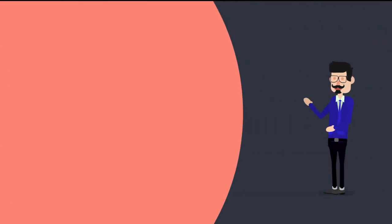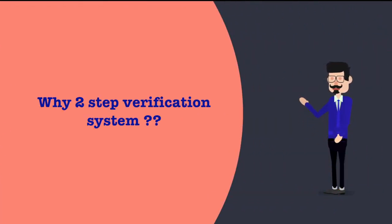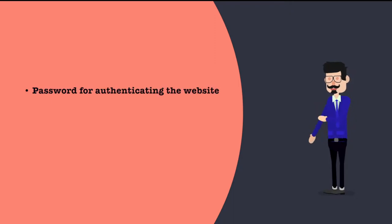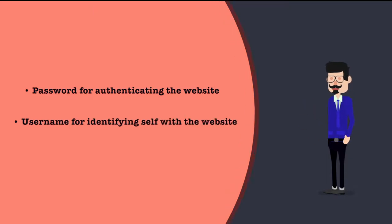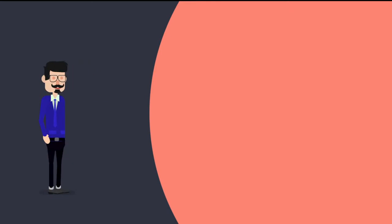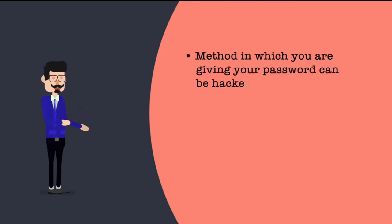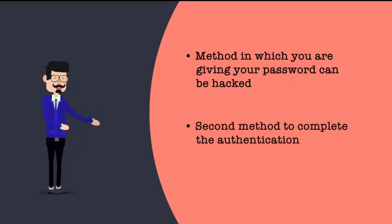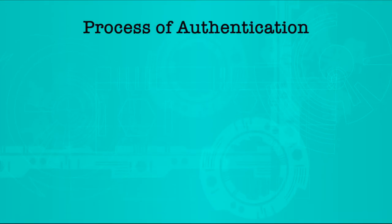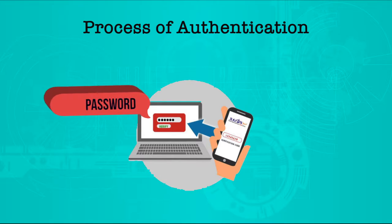So why would people suggest a two-step verification system? When you give a password, you are authenticating with the website. When you give your username, you are identifying yourself. It may happen that the method by which you give your password can be hacked. So we need to cater to a second factor — a second medium — where you supply additional authentication to complete the process. The first step is the password, and the second step is a special code given to you through a different medium.